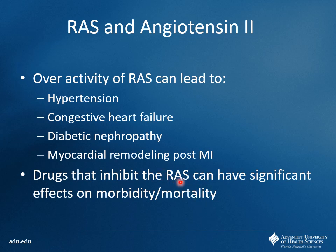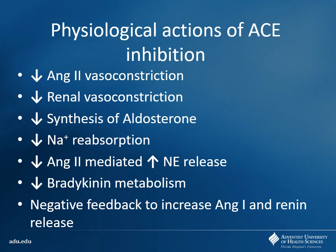Inhibiting ACE decreases angiotensin II vasoconstriction, reduces renal vasoconstriction, decreases aldosterone and sodium reabsorption, reduces angiotensin II-mediated norepinephrine release, and allows bradykinin to accumulate — which is vasodilatory. Although a negative feedback loop increases renin production, you're still blocking the enzyme, making ACE inhibitors very effective at preventing RAS overactivity.